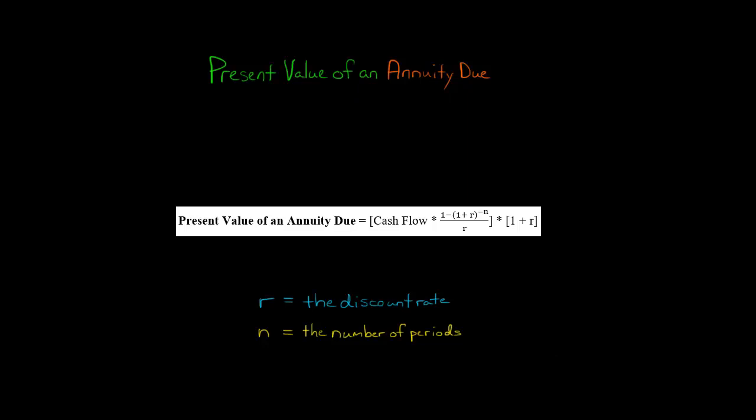In this video, I want to show you how to calculate the present value of an annuity due. Here's our formula: we take the periodic cash flow and multiply it by [1 - (1 + r)^-n] / r, where r is the discount rate and n is the number of periods, then multiply by 1 plus the discount rate.